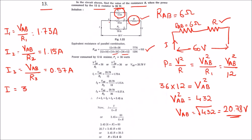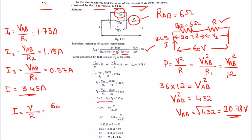The supply current is found by adding all three: I = 1.73 + 1.15 + 0.57 = 3.45 amps. Now to find R: using the formula I = V / R_total, we know V = 60 and R_total = 6 + R. So 3.45 = 60 / (6 + R), which gives 6 + R = 60 / 3.45 = 17.39. Therefore R = 17.39 − 6 = 11.4 ohms.